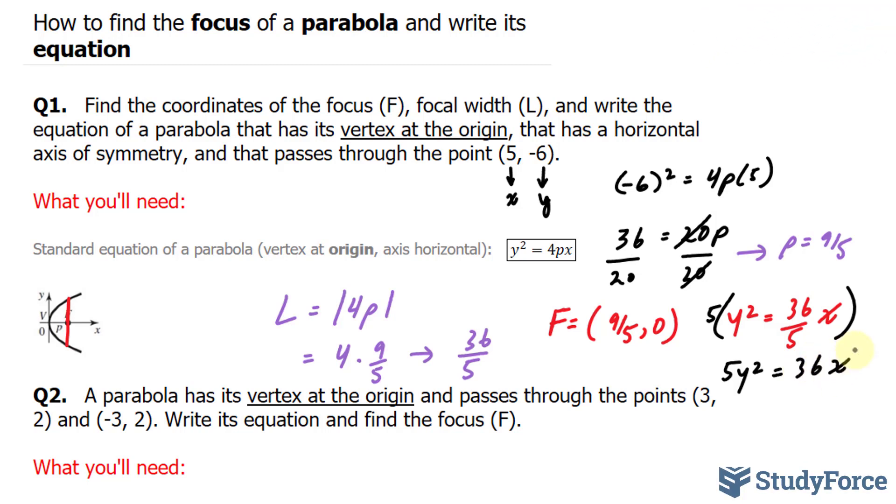And to convert this into general form, we can bring this term over, where we end up with 5y² - 36x = 0. So, this right here is in general form, and what we had originally was in standard form. Let's move on to question 2.